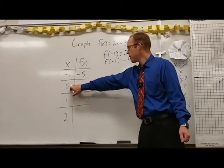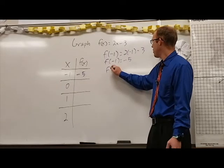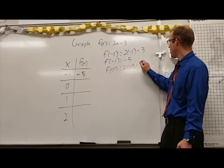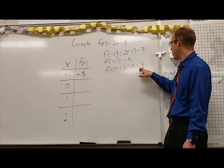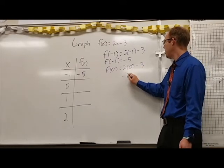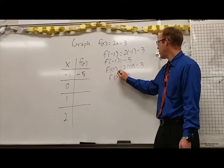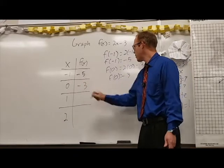Our next x value is 0, so f(0) equals 2 times 0 minus 3. 2 times 0 is 0, minus 3 gives us -3. f(0) equals -3 and that gives us our value there.